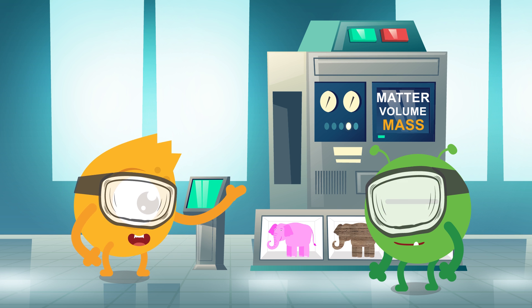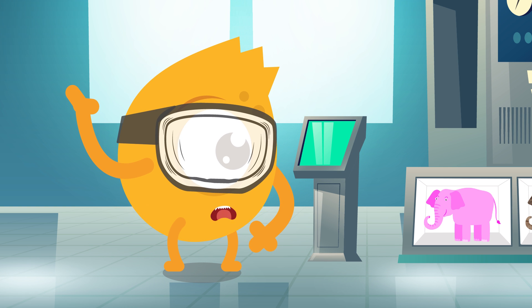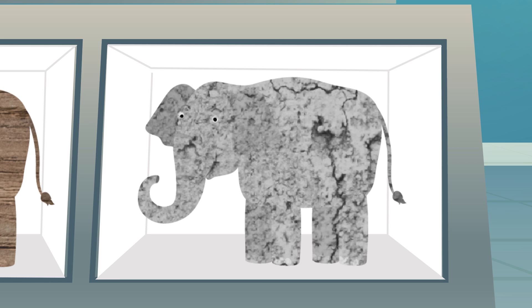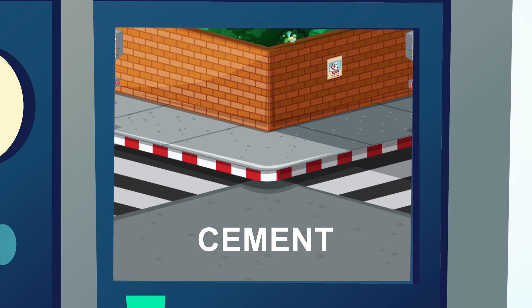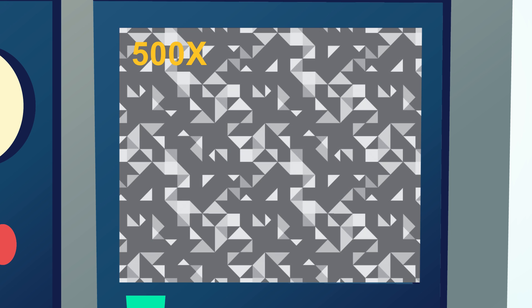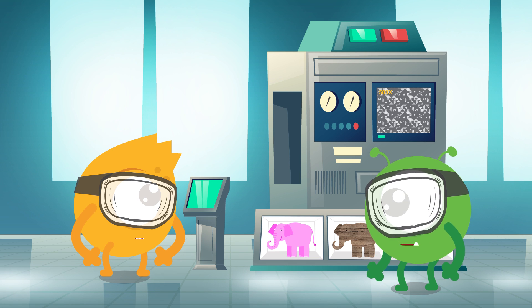That grey elephant model is made out of cement! The same stuff you find in the sidewalk! If you could look inside, you'd see that the matter is packed very tightly together! That means that cement has a lot of mass! And the more mass something has, the harder it is to move!